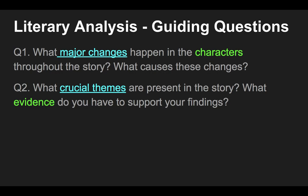Question two: what critical themes are present in the story, and what evidence do you have to support your findings? You'll notice I often ask you to support your findings — can you prove through an example that what you're saying is true? For instance, if you said friendship is a main theme in The Lord of the Rings, you'd go through and find all those moments where Frodo and Sam are struggling together toward Mordor, using those passages as definite proof of the theme.